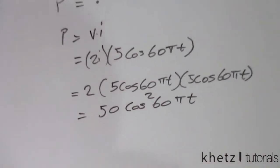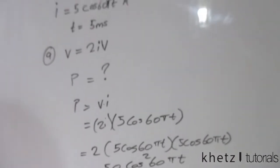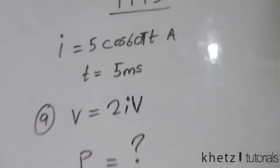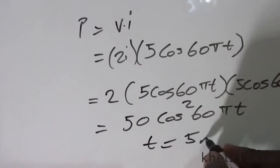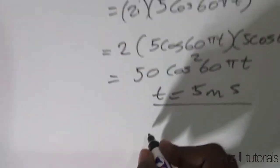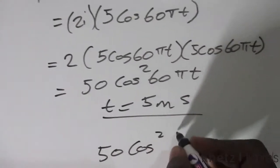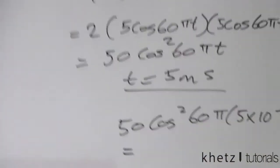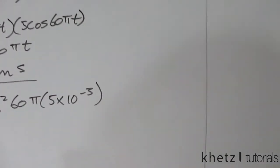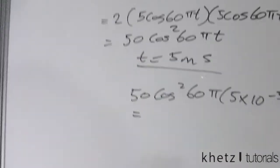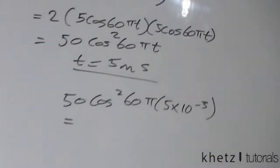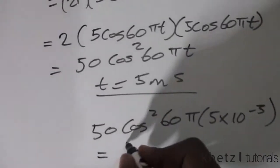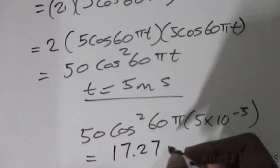But we are given a specific time where we are supposed to find that power. The specific time is 5 ms. So substituting at time equals to 5 ms, what we get in terms of t. What you should make sure is your calculator is in radians. And putting that quickly into your calculator should give you 17.27 watts.